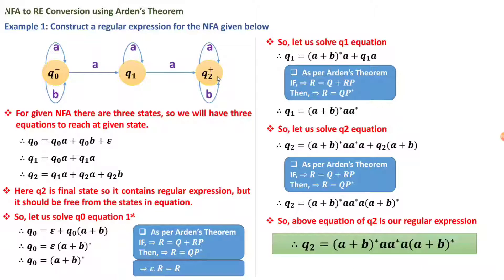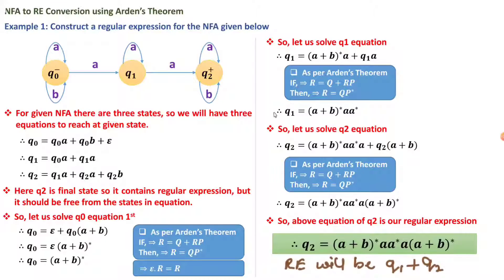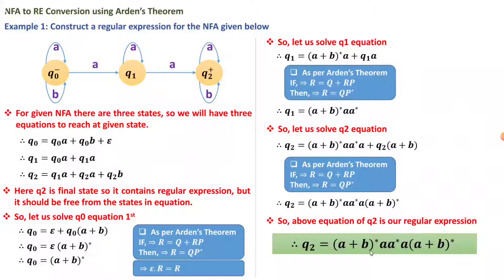Since q2 is the only final state, q2's expression is the answer. If there were two final states, say q1 and q2, the regular expression would be the union: q1 + q2, i.e., (a+b)*·a·a* + (a+b)*·a·a*·a·(a+b)*. I hope this is clear. Thank you for watching; stay tuned for more videos on the Theory of Computation lecture series.